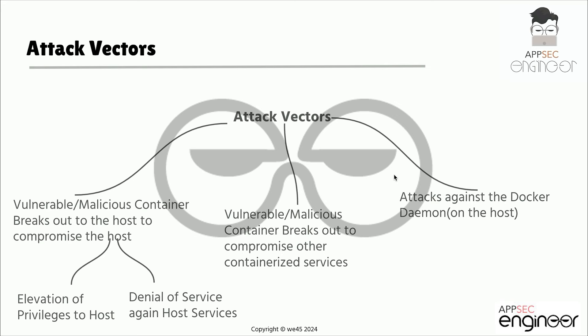These are some of the attack vectors for Docker implementations. The first one is a vulnerable or malicious container — this is used to break out to the host and compromise the entire host machine. This can include elevation of privileges to the host, where an attacker can start gaining root access to the machine running all of these Docker containers, or it can also be denial of service against host services, where the attacker could start stopping services and try to shut down the entire host machine.